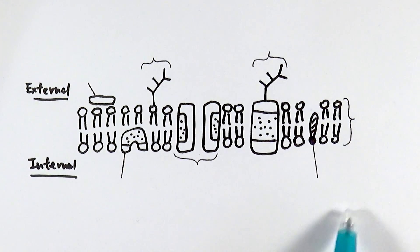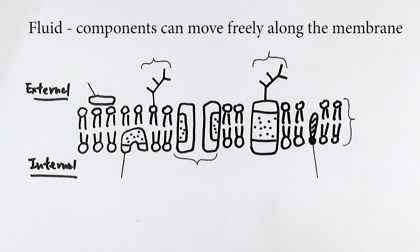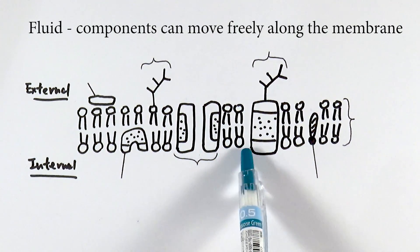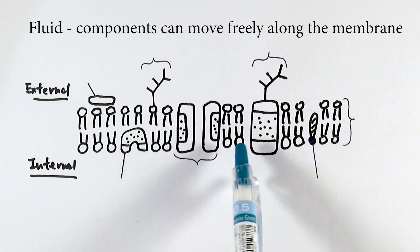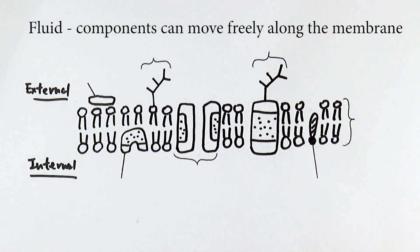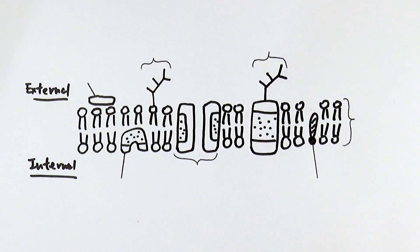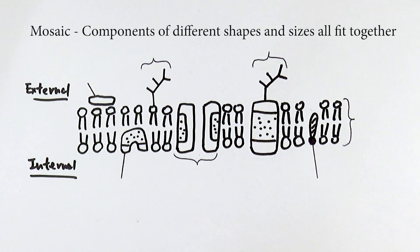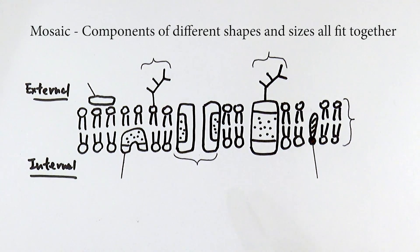Here you can see the general layout of how it looks, and that is what we call the fluid mosaic model. It's fluid because generally everything can move quite a lot — some phospholipids can float along, and certain proteins can move along the membrane, so they are not fixed in one place. It's also referred to as mosaic because there are different structures of different shapes and sizes that are still able to fit together in one membrane.